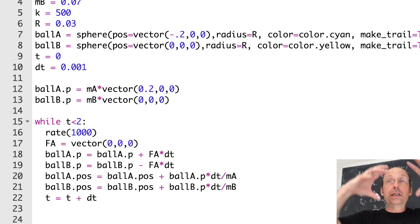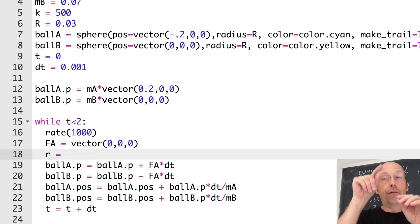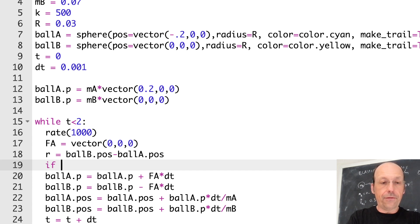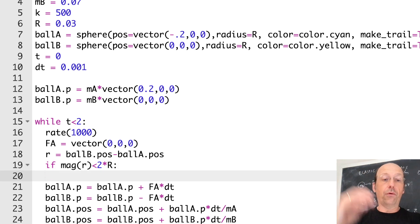So now what we want to do is to say, do they collide? Is there a collision? To do that, what I want to do is to first calculate this vector r. And it's going to be the vector from a to b. So that's ball b dot pos minus ball a dot pos. So every time I change the position, I'm going to redo that. Now I'm going to put in a conditional statement. I'm going to say, is that less than 2r? So if the magnitude of the vector r is less than 2 times r, then do the following.